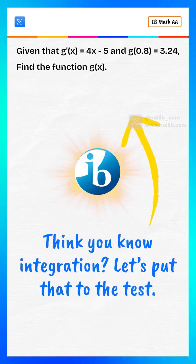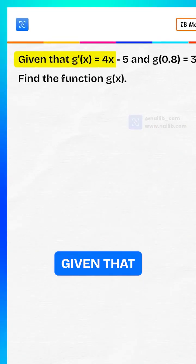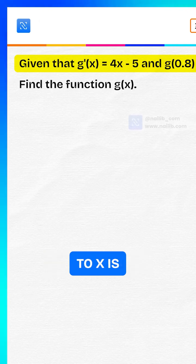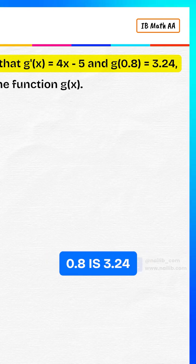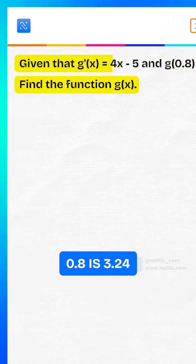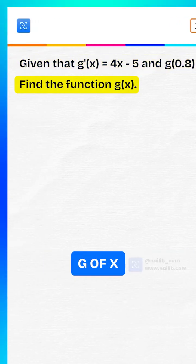Think you know integration? Let's put that to the test. Given that the derivative of g with respect to x is 4x minus 5 and the value of g at 0.8 is 3.24, find the function g of x.